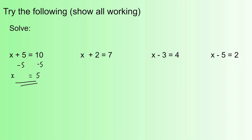Similar idea for the next one — we want to get the x term on its own, so we're going to take away 2 from both sides to keep the equation balanced. The plus 2 and minus 2 cancel out to give zero, leaving just x. Seven minus 2 is 5, so we get x equals 5 again.